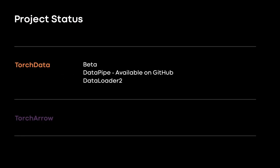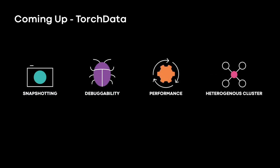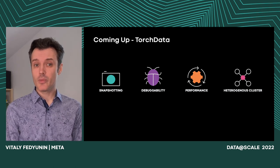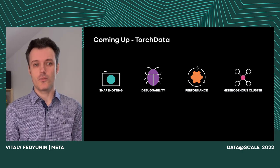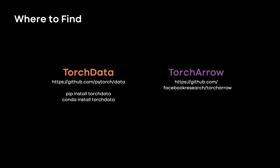Now let me tell you what is available and what is coming next. TorchData is in beta stage right now, with data pipes available to develop new datasets. It is getting a new data loader API and reading service soon. TorchArrow is also open source as a prototype and will release a beta version this year. We are currently working on expanding the collection of data pipes, adding highly demanded snapshotting functionality — also known as fault tolerance and restoration — and improving debuggability with better error messages and profiling. Future plans focus on performance and distributed aspects, like heterogeneous cluster support and offloading computation from training machines without dataset rewrites. Please refer to our GitHub repositories, and you can install TorchData using pip or conda. Thank you.